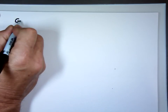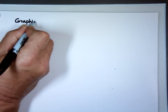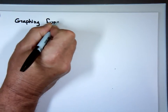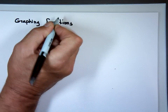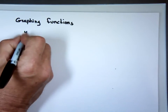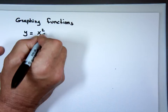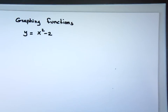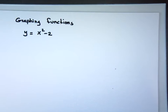This topic is graphing functions. Let's take a function y equals x squared minus 2. Notice this is different than the one we just did — that one was a linear function. Linear always means a straight line. This is not linear; the highest power of x is not 1. This is a quadratic equation.